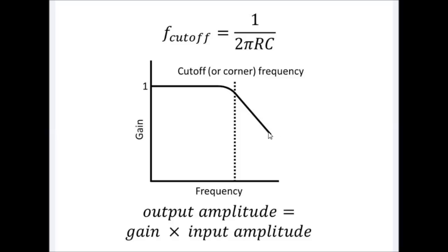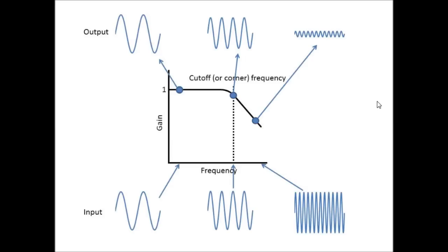So let's say we had a gain of 0.1 and we had an input amplitude of 1, then our output amplitude would just be 0.1. Let me show you another picture that helps me think about what a low-pass filter does.